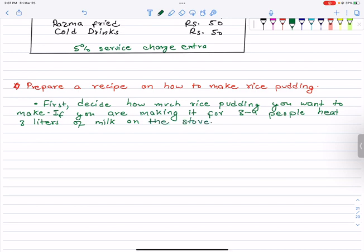First decide how much rice pudding you want to make. If you are making it for 3-4 people, heat 3 liters on the stove. Then, next step. Then prepare 300 grams of clean rice, 300 grams of rice.